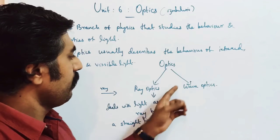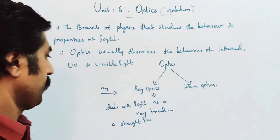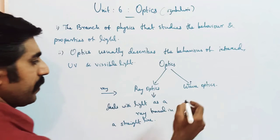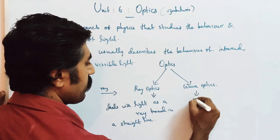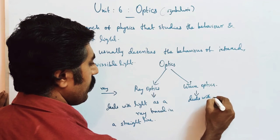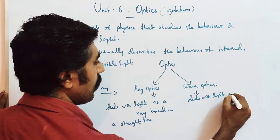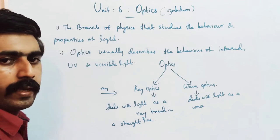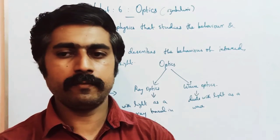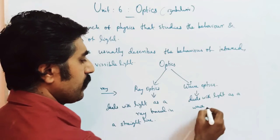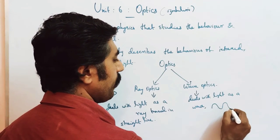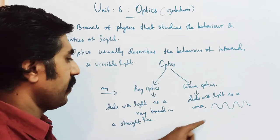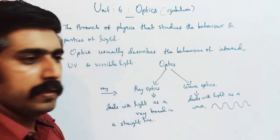Wave optics — where optics deals with light as a wave. We consider light in the form of a wave traveling as a wave.